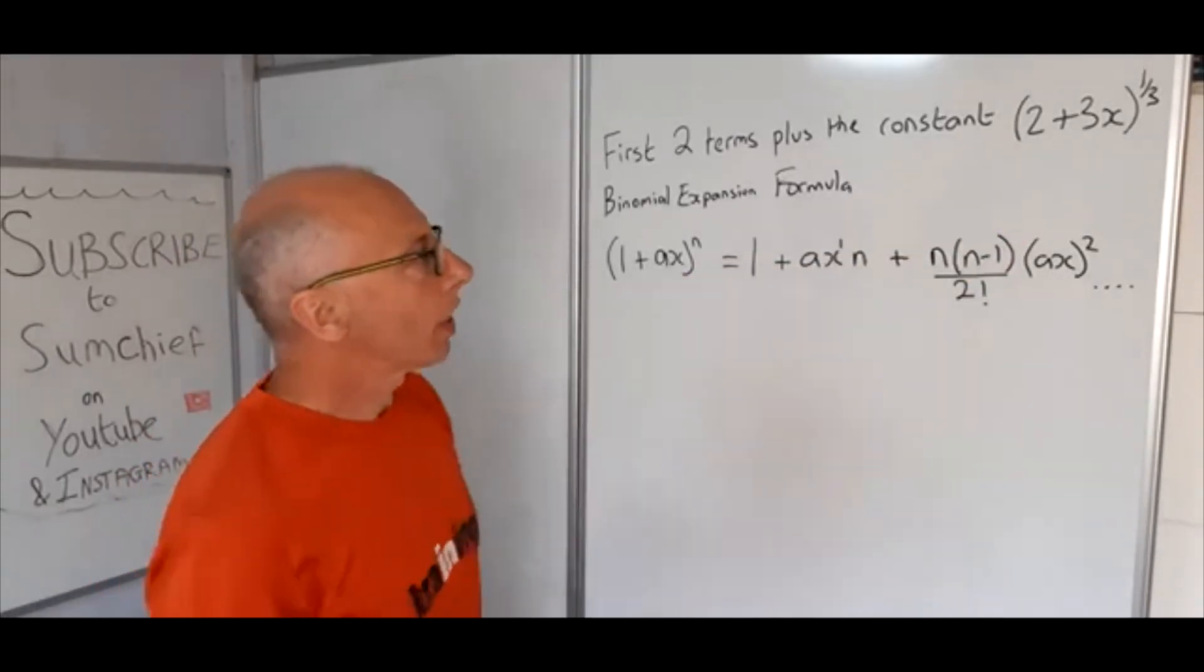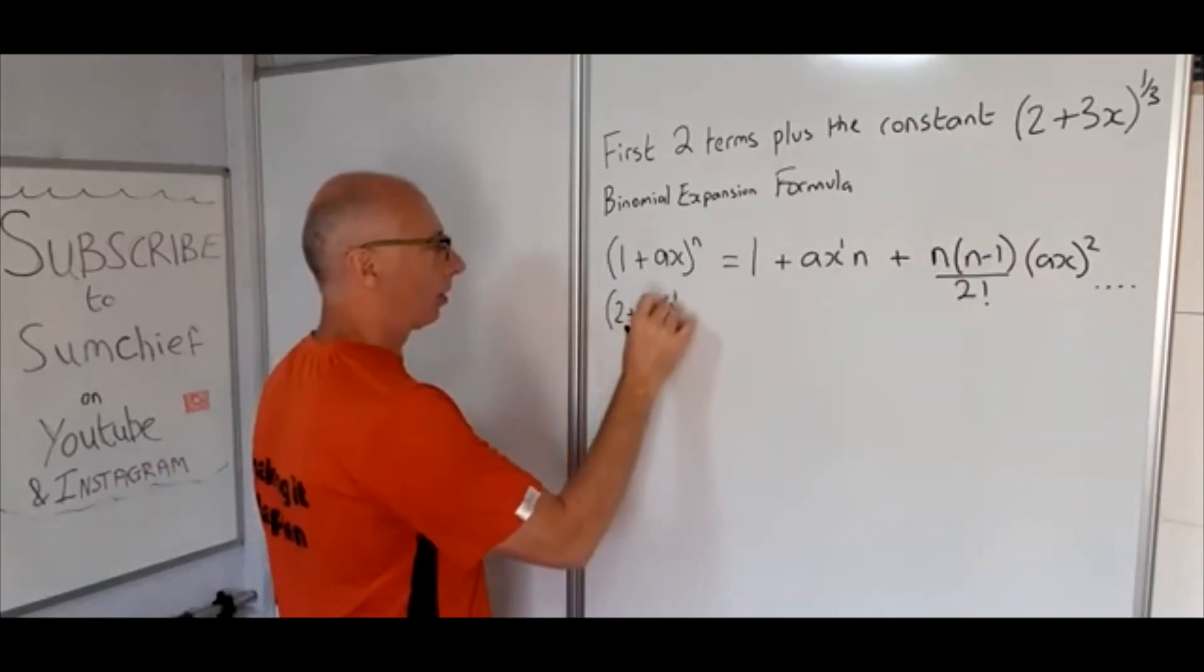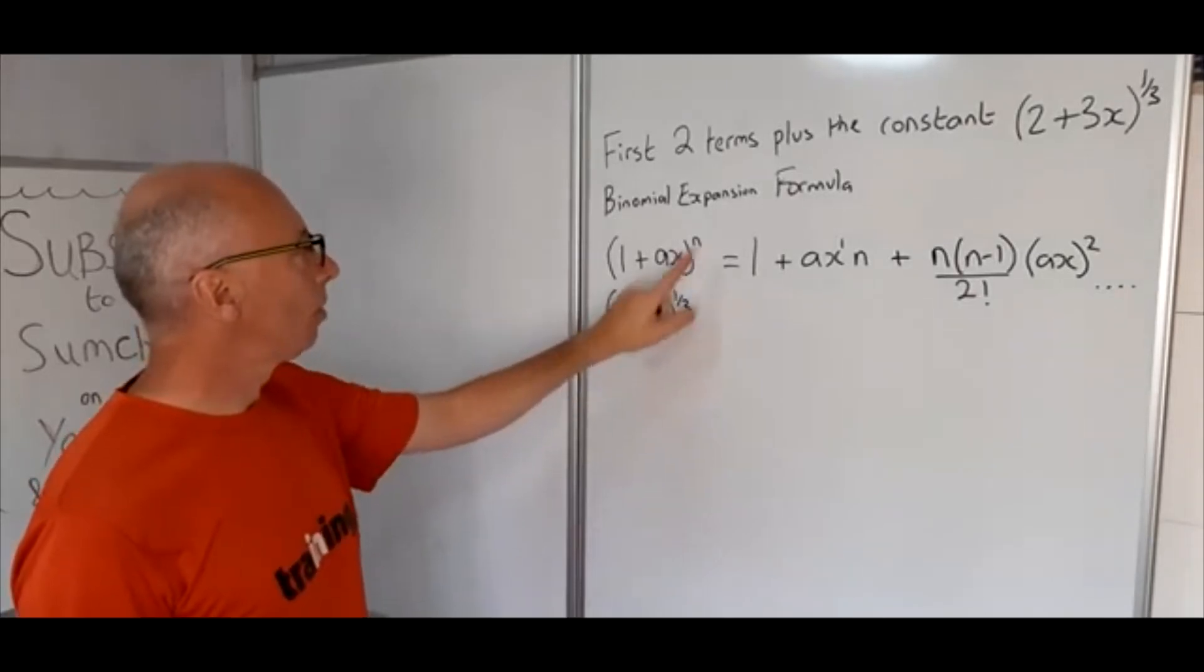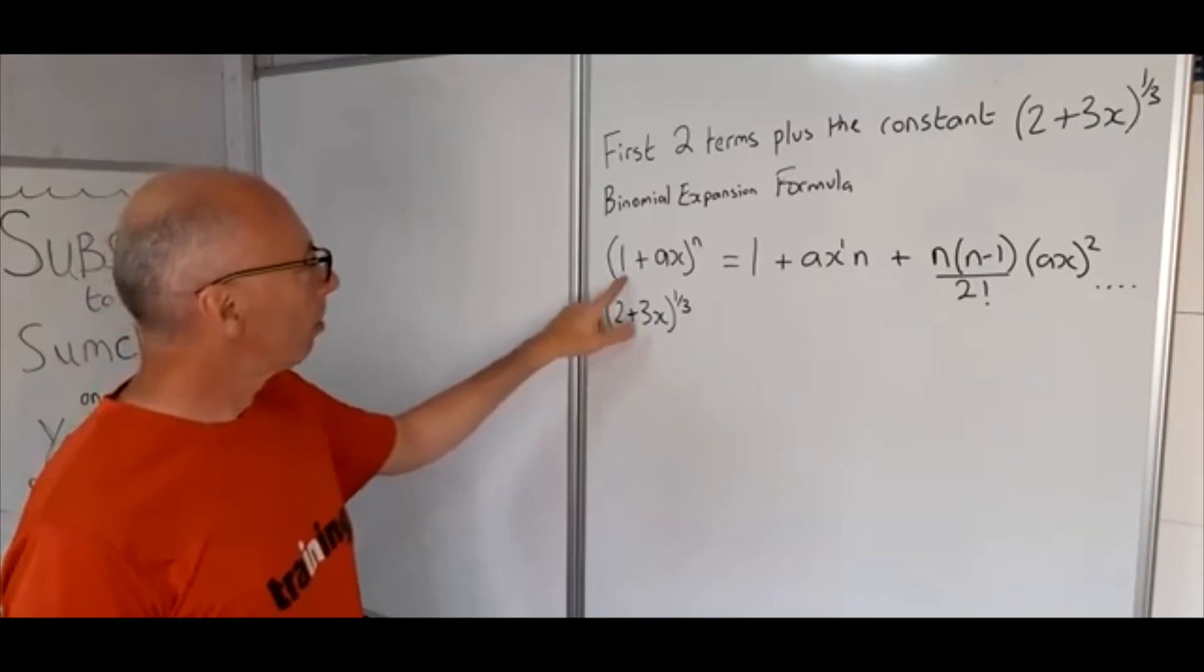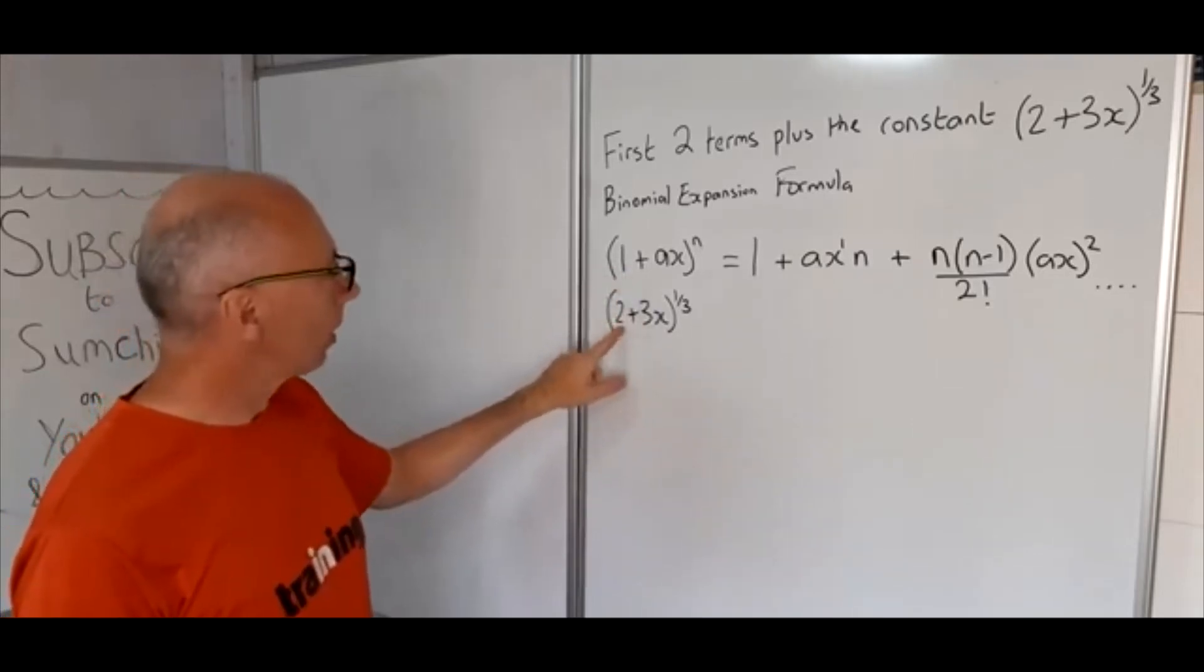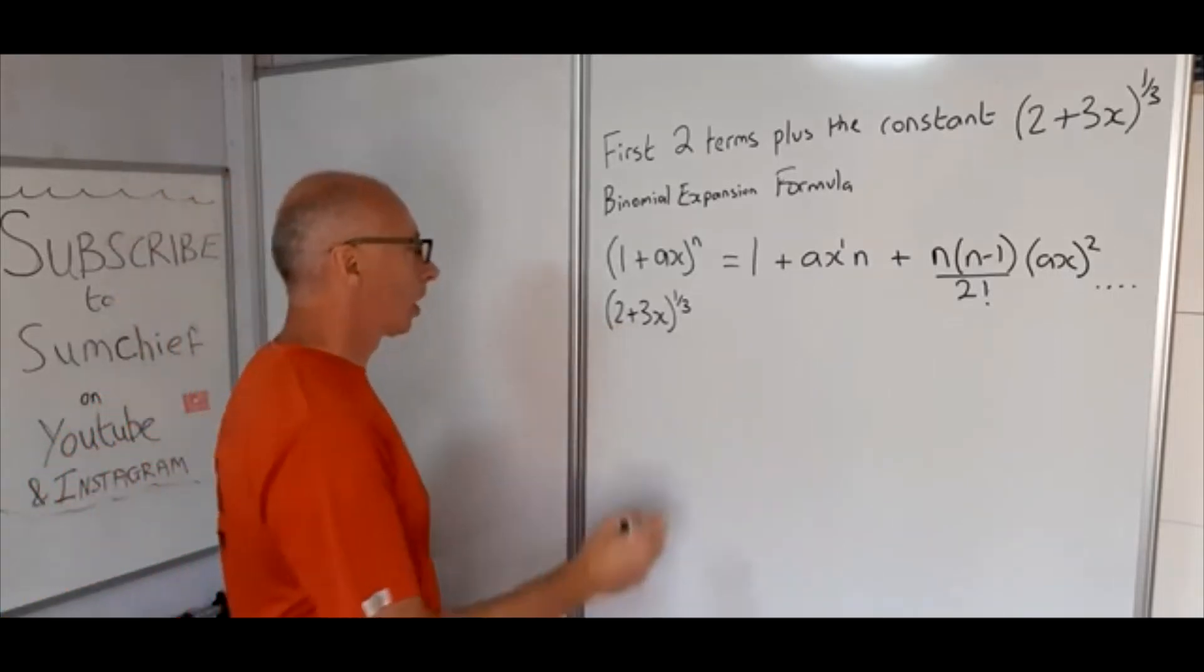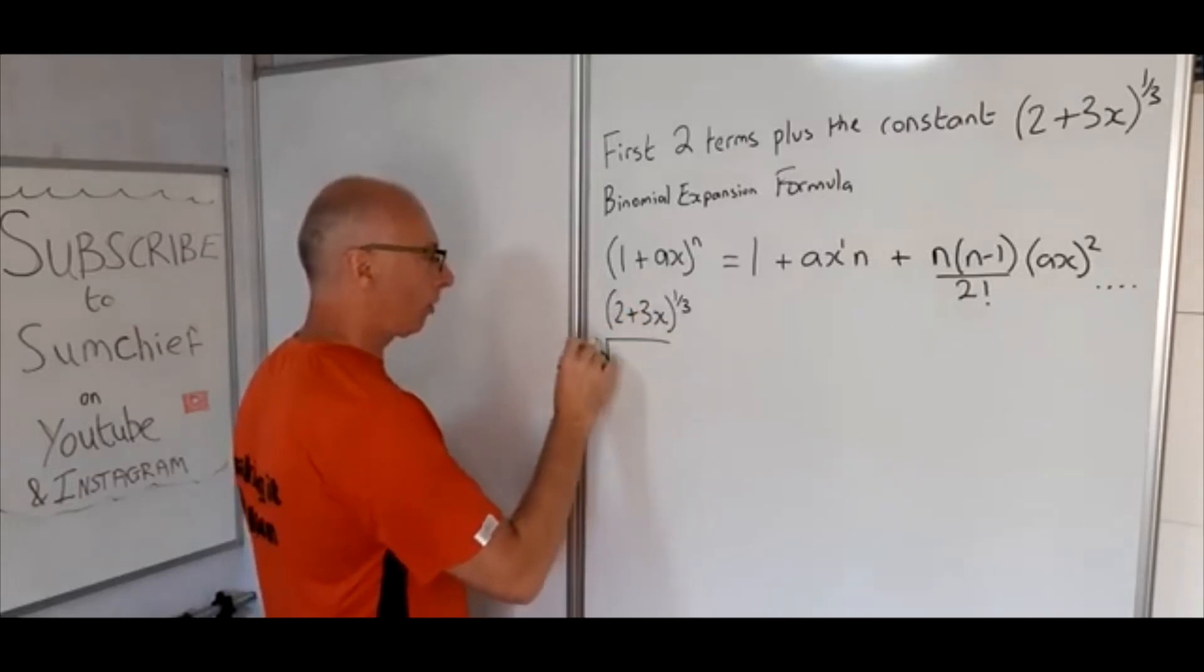We've got this question here, (2 + 3x)^(1/3). We can see that n equals 1/3 in this formula and a equals 3, but there's a slight problem: we've got a 1 here whereas in the question we've got a 2, so what we can do is factor out this 2.